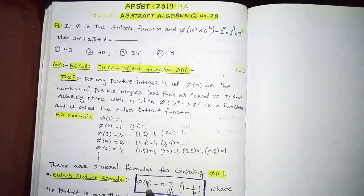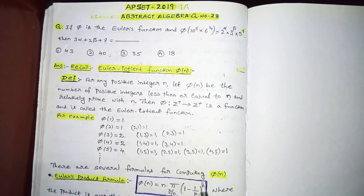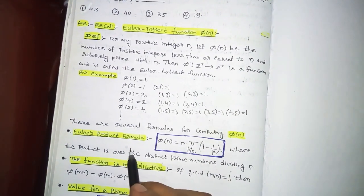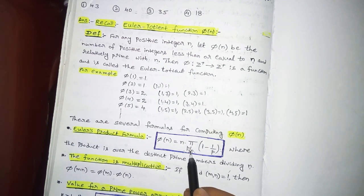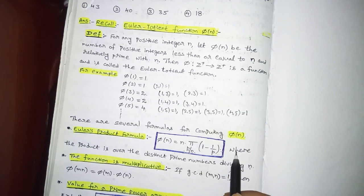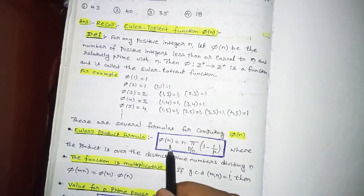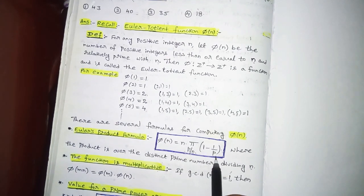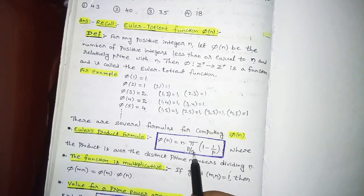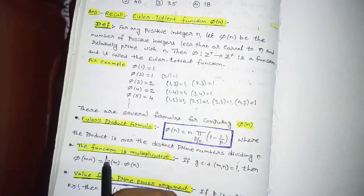Now there are several formulas for computing φ(n). The first one is the Euler product formula, given by: φ(n) = n × ∏(p | n) (1 − 1/p), where the product is over the distinct prime numbers dividing n. So φ(n) equals n multiplied by (1 − 1/p) for each distinct prime p that divides n.